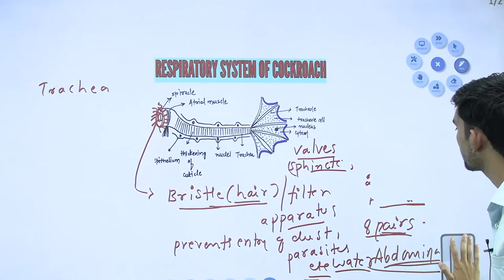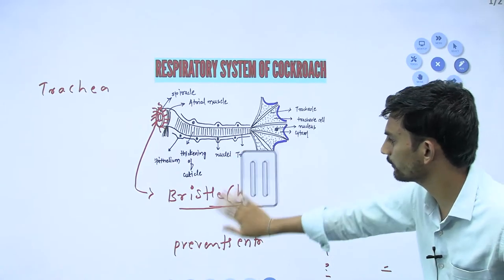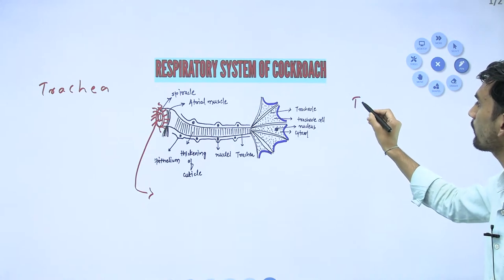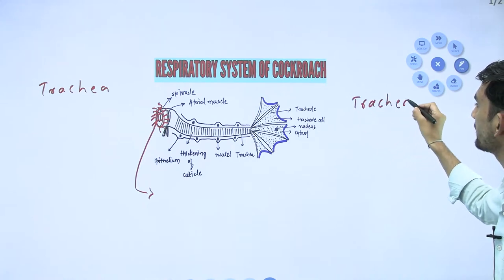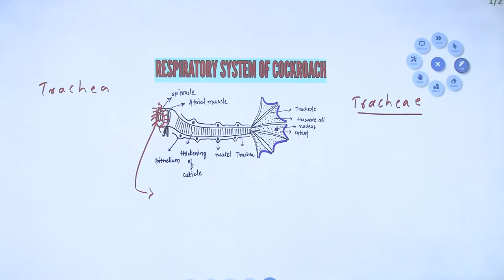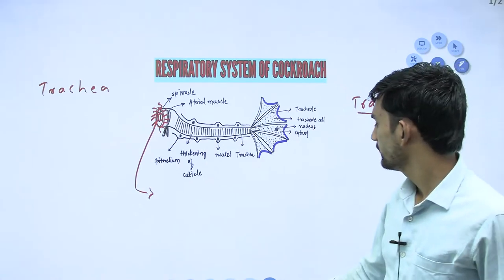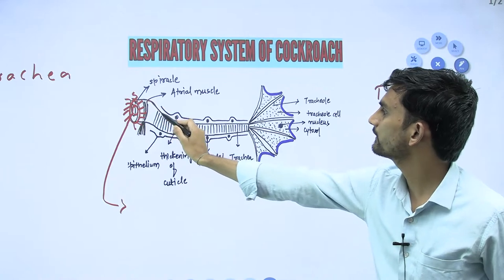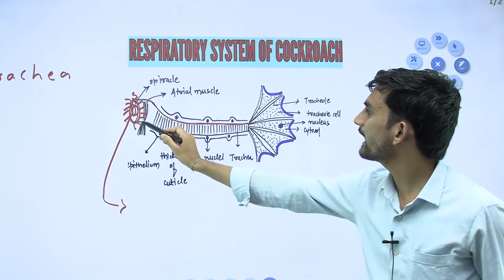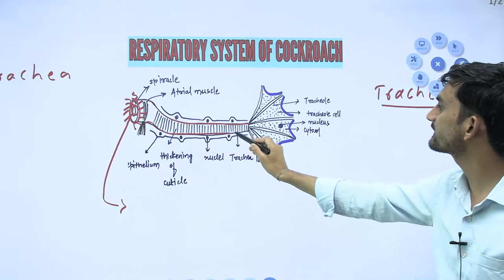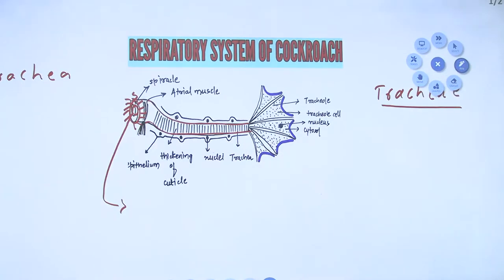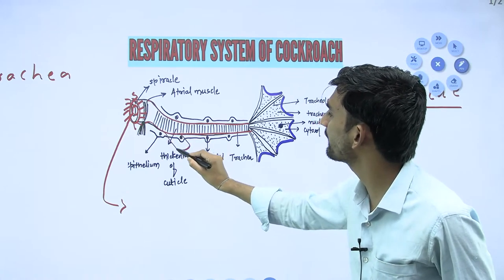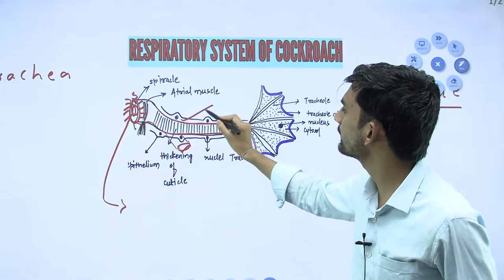Next heading: trachea - plural, tracheae. The trachea is a syncytium covered by a multi-nucleated structure with an epithelial lining. You will find three pairs of longitudinal tracheal trunks - three large trunks in total running through the cockroach body.